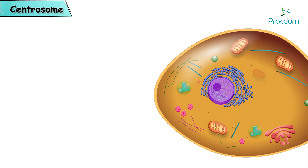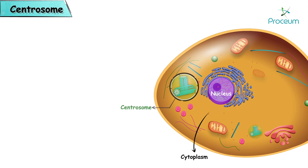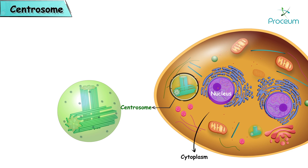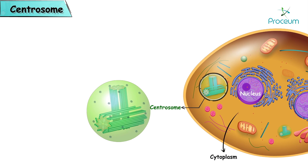Centrosome. Within the cytoplasm and near the nucleus we can find a spherical organelle known as a centrosome. In multinucleated cells, a centrosome is near each nucleus.